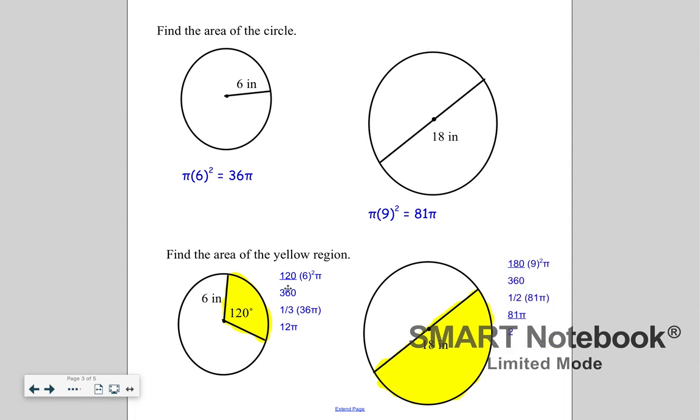For the sector areas, I did 120 over 360. It's that part over the 360 whole circle, and then 6 squared pi. That's the area of the whole circle. So I'm basically finding one-third of the entire area, and that simplifies down to 12 pi.